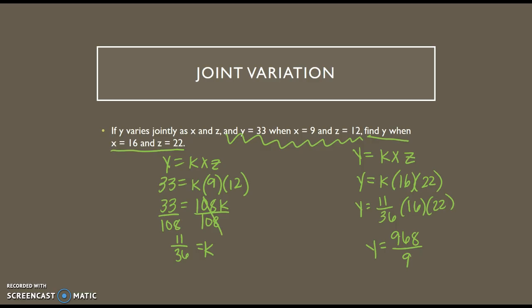All right, so a joint variation just means that you throw that third variable in there, and it's kind of like a form of direct variation. It means that the one variable is directly proportional to both of the other two variables. And so you find your constant of variation, and then you can find any of the variables it's asking.